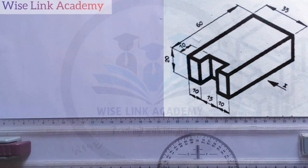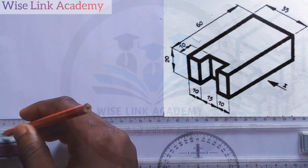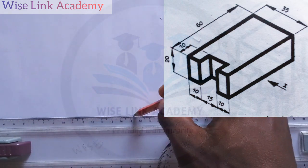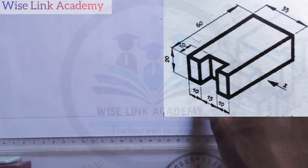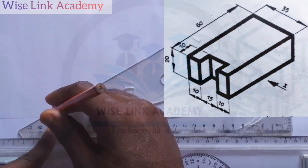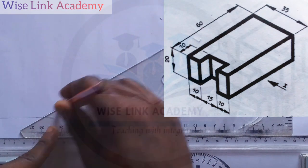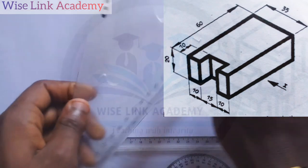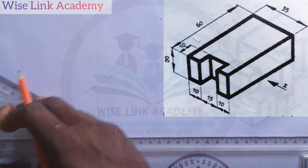So my first task is to draw out my isometric axes. I'll take it this way. Having done that, I'll take my set square. I'll take it down this way. Also, I'll take it this way around.